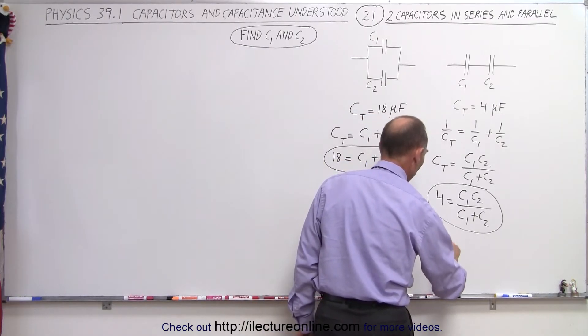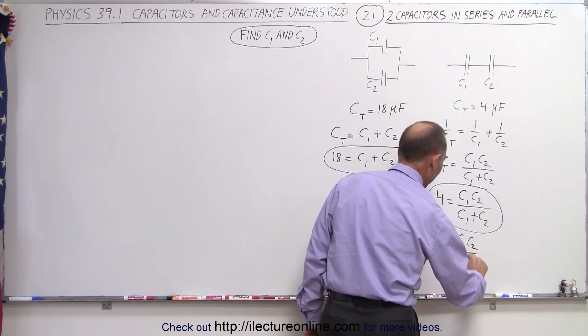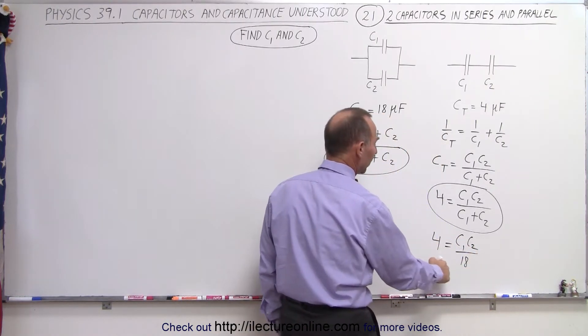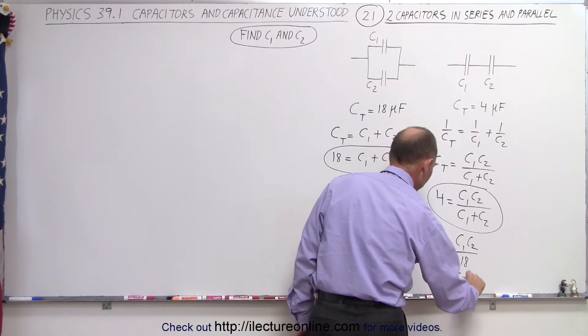So when we do that, we end up with 4 is equal to C1 times C2 divided by 18, or when I multiply, that would be 72 is equal to C1 times C2.